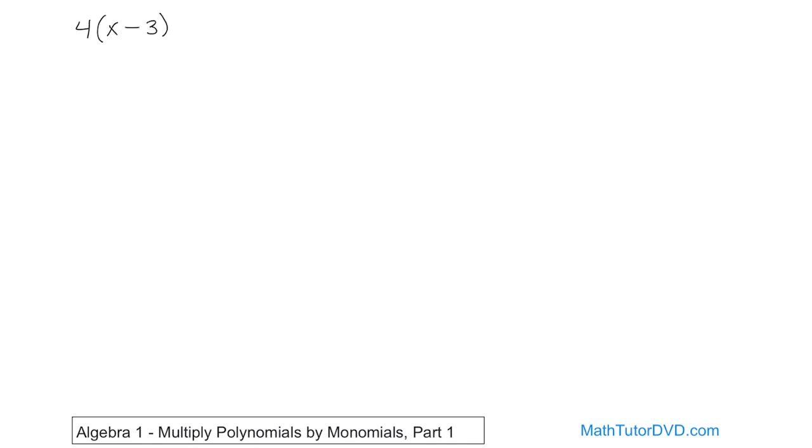We've already learned how to multiply monomials together. Here we're just extending it one more level so that we're multiplying something like 4 — this is the simplest type of problem — times x minus 3. You actually know how to do this because you know the distributive property, but you can also think of this as a polynomial, a binomial in this case.